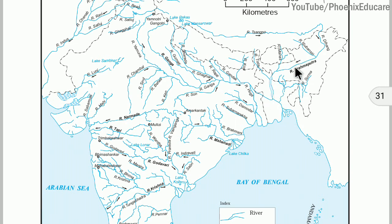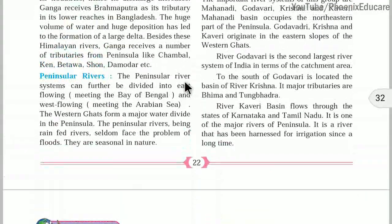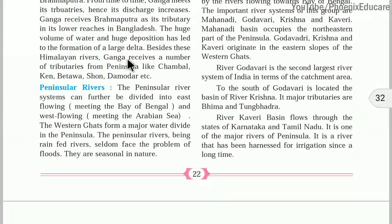Brahmaputra becomes a tributary of Ganga. Yamuna river and Ganga river meet at Allahabad. Because of continuous deposition — sand, rock, silt — plains are formed. So we have the Ganga plains and Brahmaputra plains. Ganga also receives a number of tributaries from the peninsula — like Chambal, Kain, Betwa, Son, and Damodar.